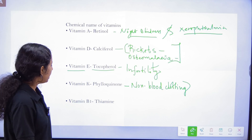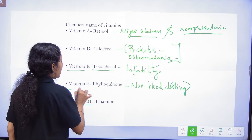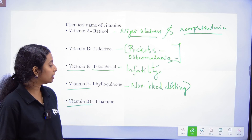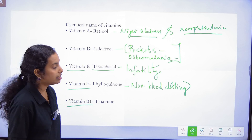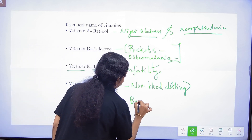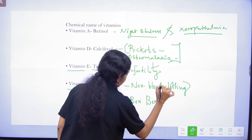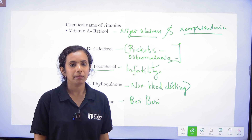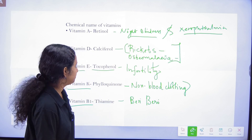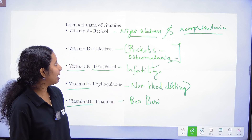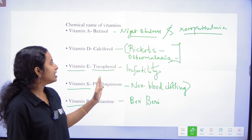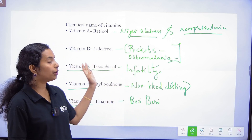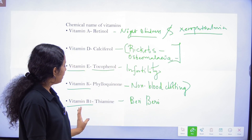Vitamin B1 is Thiamine. Thiamine deficiency causes Beri-beri. So to summarize: A = Retinol → Night Blindness / Xerophthalmia; D = Calciferol → Rickets / Osteomalacia; E = Tocopherol → Infertility; K = Phylloquinone → Non-blood clotting; B1 = Thiamine → Beri-beri.